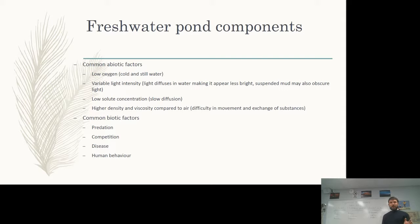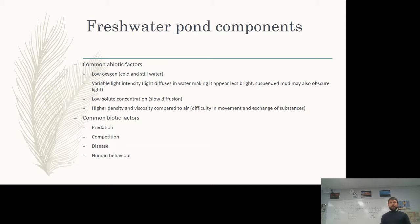The common biotic factors are predation, competition, disease, and human behavior. An example of predation is a bird population living around the freshwater pond eating insects and insect larvae. Competition occurs between small fish and those birds competing for the same food source — the insect larvae. Disease, specifically bacterial disease, is an important biotic factor, and human behavior will be discussed in more detail later.